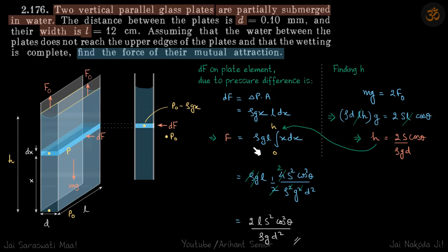This is df which is on the plate element due to pressure difference. We need to find the total force of attraction between the plates, so we will integrate this from zero to h. Now h is not given to us, so we'll find it like we have done in previous problems.